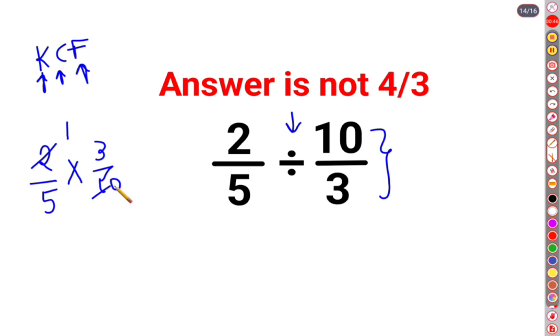So now the 1's cancel and the 5's cancel. So the answer is 3 multiplied by 1 upon 5 multiplied by 5. So the answer is 3 upon 25.